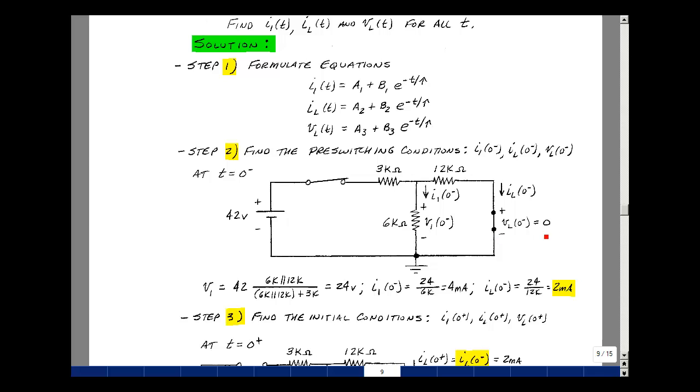With the inductor being a short circuit, the voltage is equal to zero. If I could find the voltage across the 6k and the 12k, then I could find these two currents. What I've got is a voltage divider.